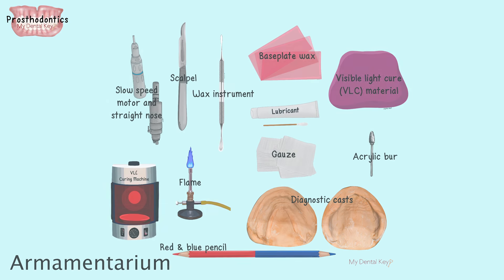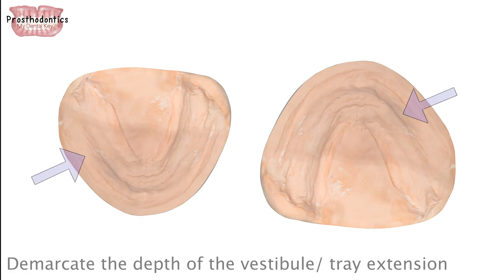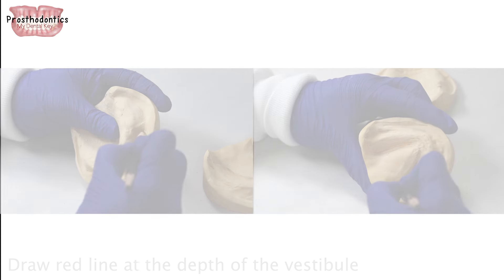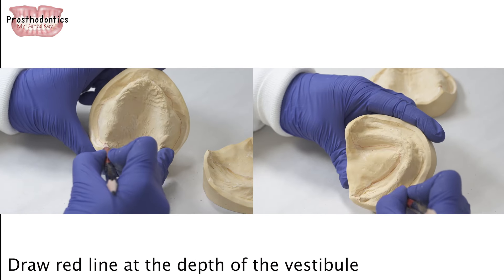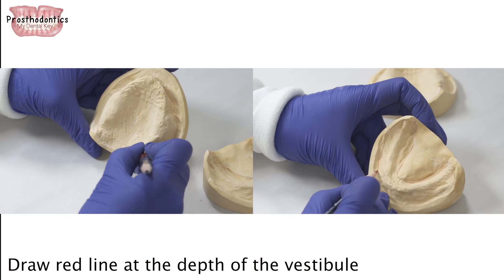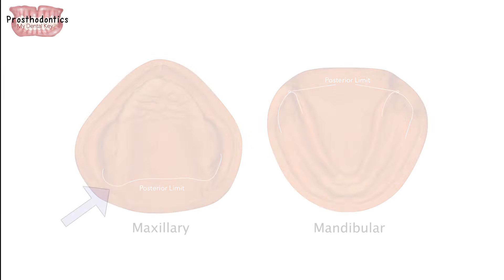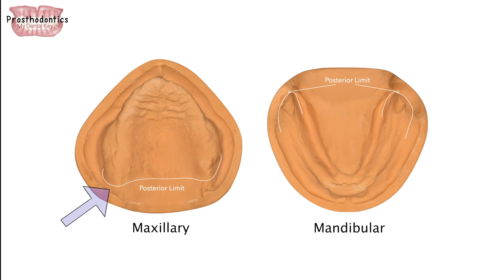First, gather your needed materials as shown in this illustration. Next, demarcate the depth of the vestibule and the desired tray extension. Draw a red line at the depth of the vestibule to demarcate the final denture flange extension. The maxillary posterior limit is the line that crosses the palate at the vibrating line, centered in the depth of the pterygomaxillary notches.